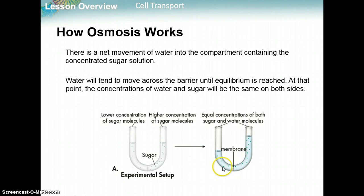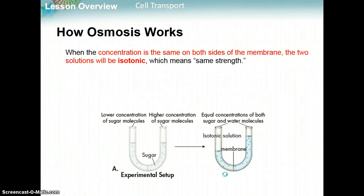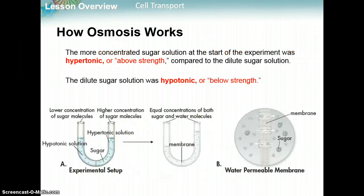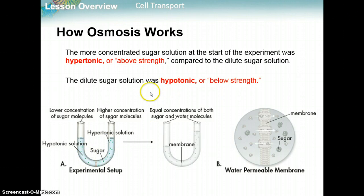When the concentration is the same on both sides of the membrane, the two solutions are called isotonic — 'iso' means equal or same, like an isosceles triangle with two equal sides. The more concentrated sugar side is known as a hypertonic solution — 'hyper' means high, so you have more sugar molecules and are more concentrated. The less concentrated left side is hypotonic — 'hypo' means low or below — so it has fewer sugar molecules compared to the right.